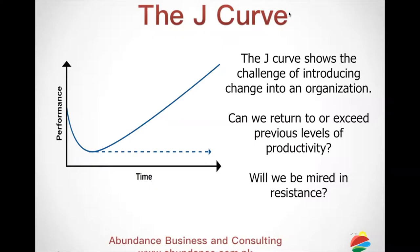This is the J-curve, which shows the challenge of introducing change into an organization. If you look at the J alphabet in itself, it first goes down and then it goes up. This is what it is signifying: whenever there is a change initiative happening in an organization, you can expect that initially the performance will go down, or the productivity of the people who are asked to change will go down.